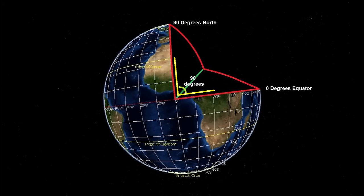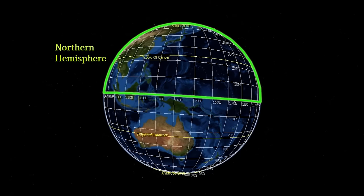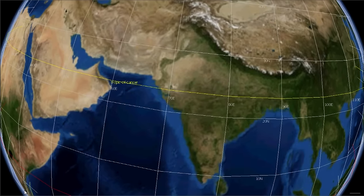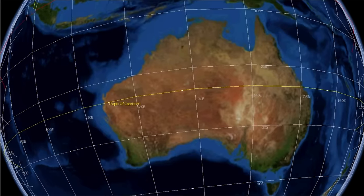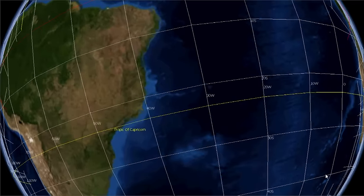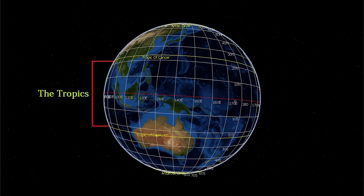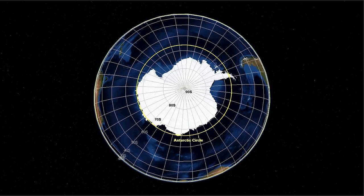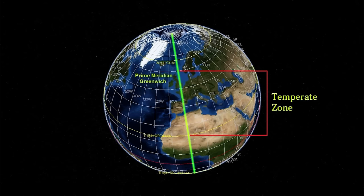Note that the poles are at a ninety degree angle from the equator. North of the equator is the Northern Hemisphere; south of the equator is the Southern Hemisphere. North of the equator we have the Tropic of Cancer, and south of the equator we have the Tropic of Capricorn. Between these lines are the tropics. At sixty-six degrees, thirty-three minutes, forty-four seconds north and south of the equator are the Arctic and Antarctic circles. Between here and the tropics is the Temperate Zone.